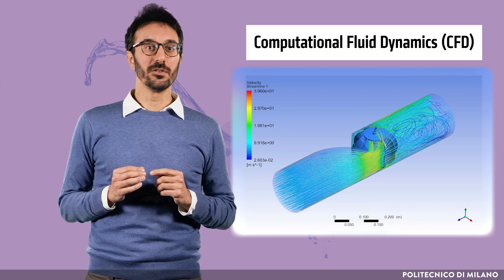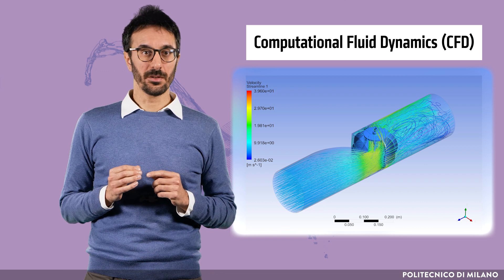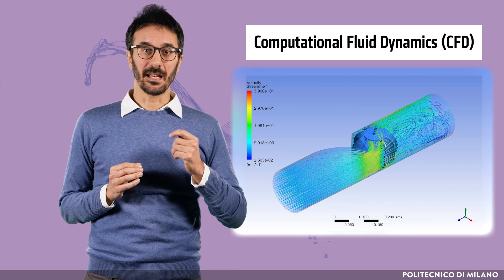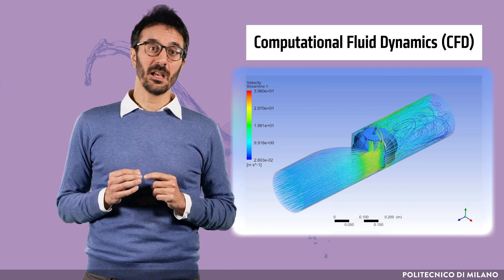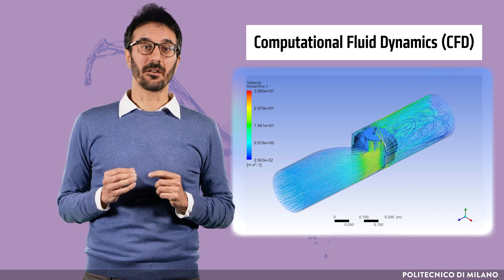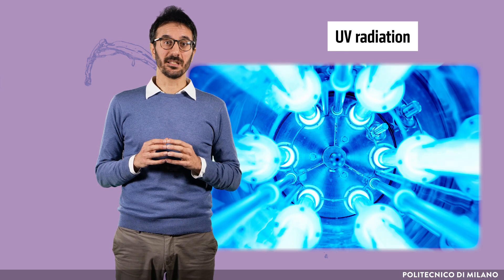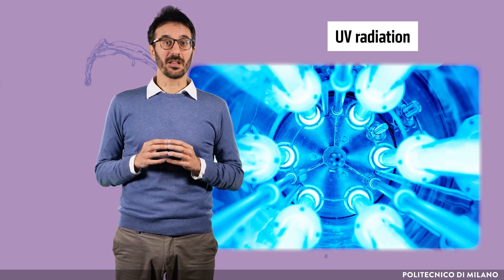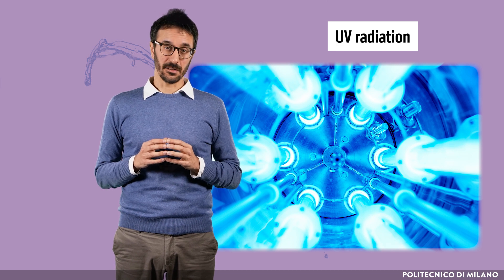CFD was initially used for problems related to fluid motion, but its application was then extended to many other physical, chemical, and biological phenomena. In principle, whatever physics can be described if we know its characteristic equation. Looking at our example, we can replace the chlorine-based disinfectant with UV radiation — another widespread disinfecting agent for water treatment. In such a case, we must include the radiative transfer equation to simulate the propagation of UV radiation inside the reactor.